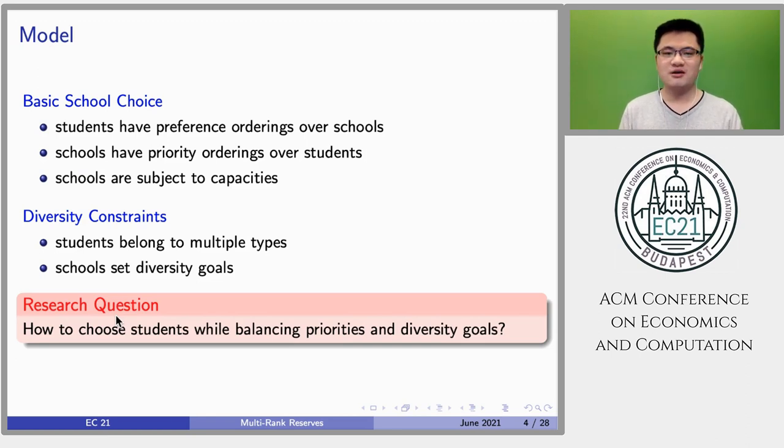Let me briefly describe the problem we studied. In the basic school choice model, students have preferences over schools, schools have priorities over students, and are subject to capacities. In the model of school choice with diversity constraints, students are associated with multiple types.